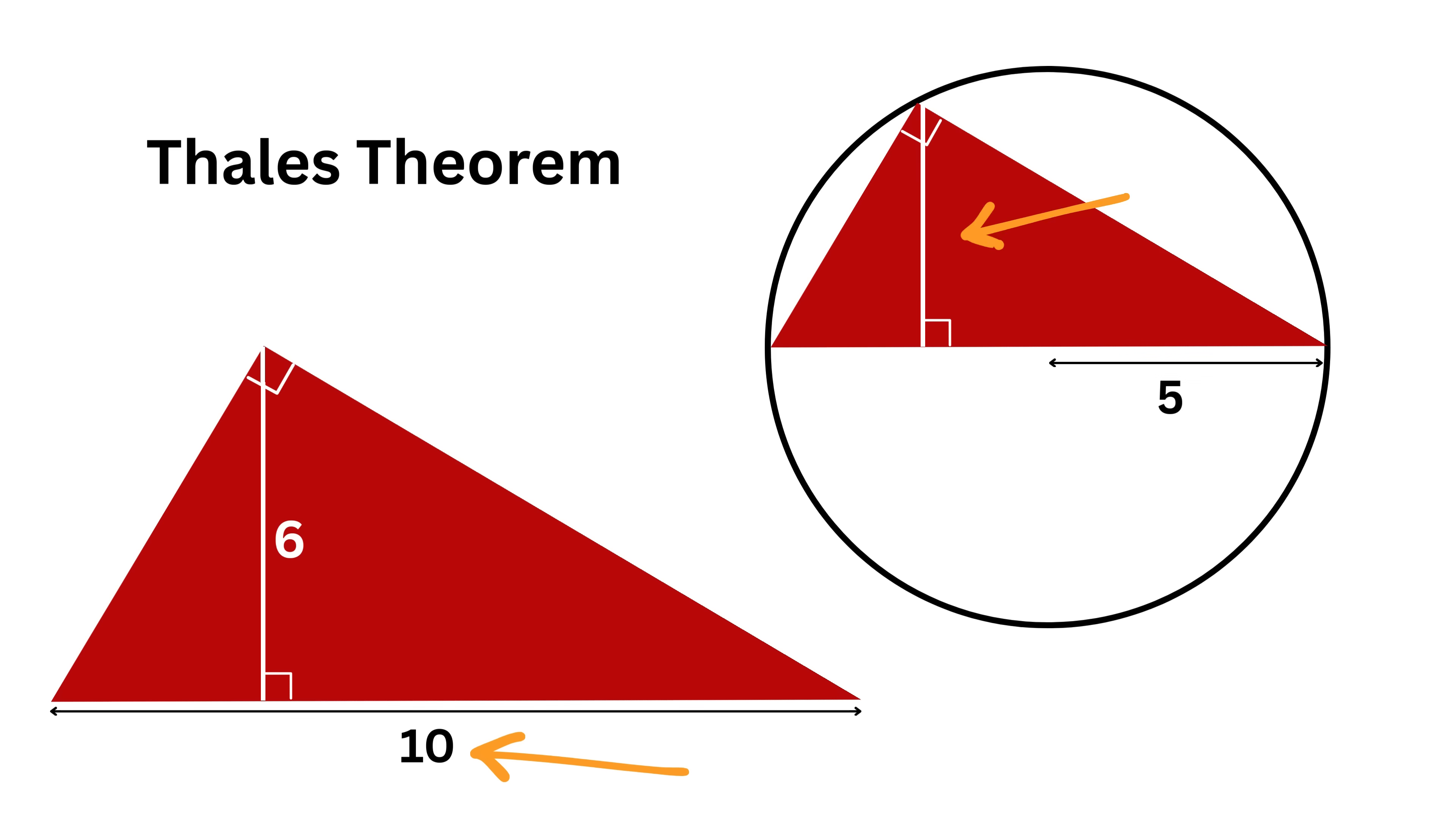This height can never be 6. Why? Because in a circle of radius 5, the maximum possible height is exactly 5. It violates Thales' Theorem,